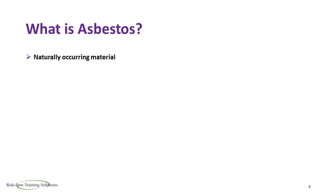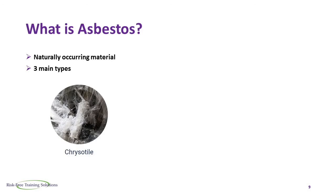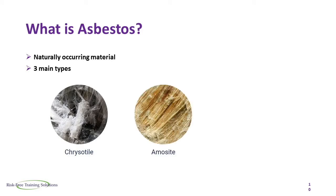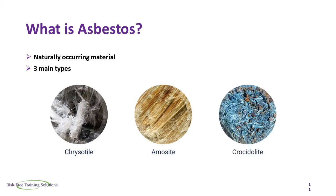Asbestos is a naturally occurring material and there are three main types. Chrysotile, which is generally referred to as white asbestos. Amosite, which is brown asbestos. And Crocidolite, which is referred to as blue asbestos.